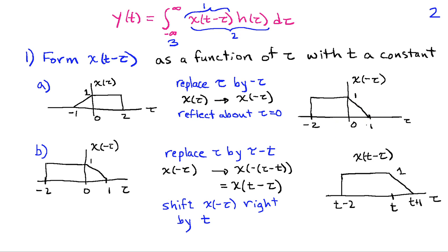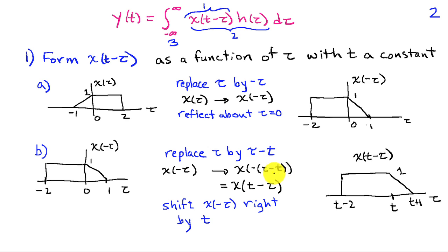Then in the second part, we're going to shift this reflected signal. We take x(−τ) and replace τ by τ − t. If you do the algebra, placing τ − t in for τ and applying the minus sign out front, you end up with x(t − τ). This transformation of the independent variable amounts to shifting x(−τ) to the right by t.